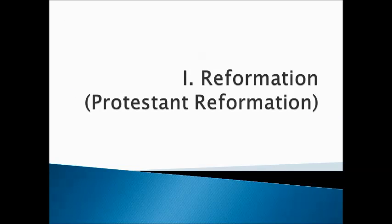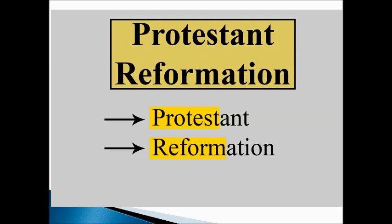The Reformation is also called the Protestant Reformation. If we look at the key words — Protestant and Reformation — you'll see highlighted in Protestant is the word 'protest.' They're objecting to some of the practices of the Catholic Church. In Reformation, the root word 'reform' is highlighted. To reform something is to change and make it better. So the object of the Protestant Reformation was to object to some practices of the Catholic Church and then to change the Church to make it better.